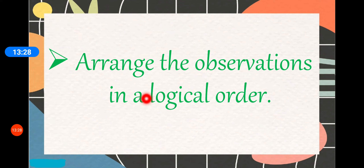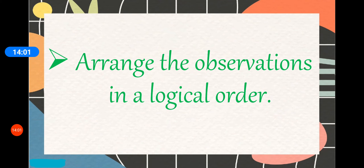After that, arrange the observations in a logical order. This point is very, very important. You have to arrange all the observations in a logical, sequential order. For example, if you are telling about the scene at a beach — what the children are doing, what people are doing — you write all those sentences one after the other. And if you are talking about the sky, like the sun is shining brightly and there are birds flying, you write those sentences together. There should be a sequential, logical order to the sentences you write.